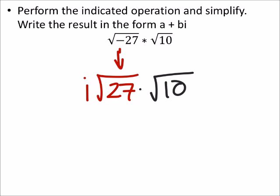And 27 can be split up into 3 and 9, which is 3, 3, and 3, really. And 10 also splits up into 2 and 5. So, I really have i times the square root of all this garbage.